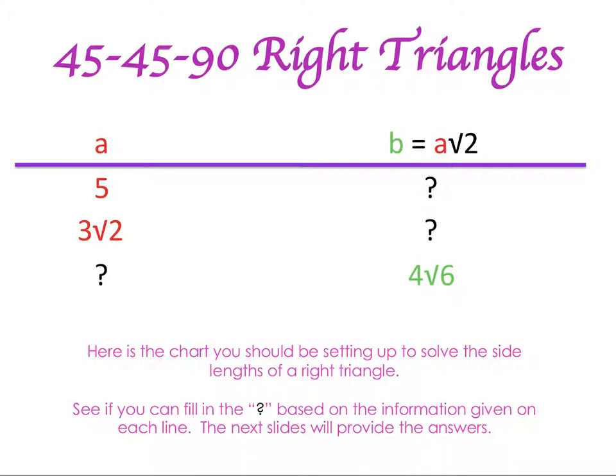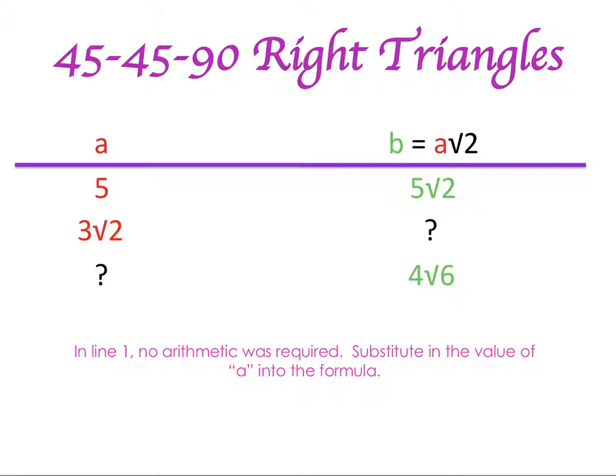I set up a couple of problems for you again. What I'd like you to do is either pause the video or don't advance the PowerPoint, and see if you can come up with the values. Try and solve for where you see the black question marks. Hopefully you were successful. The first line is pretty straightforward — this is my plug and play. I gave you the side length of 5 for my leg in the triangle, and what I'm going to do is plug it right into my formula for the hypotenuse. My value of X was 5, so I plug it in: 5 times the square root of 2. And I'm finished — I have my two legs and I have my hypotenuse.